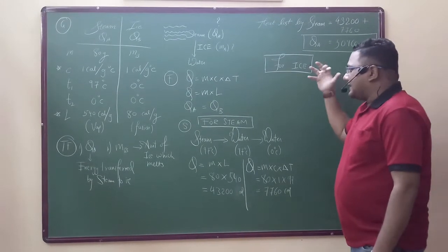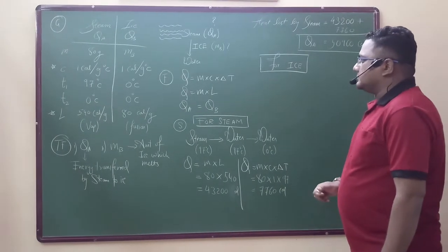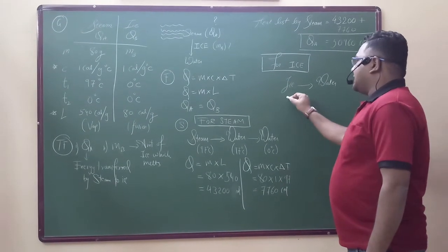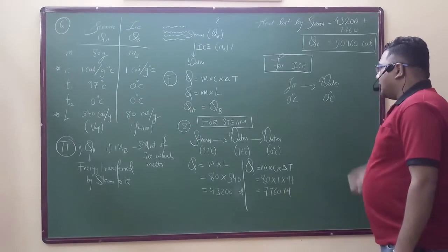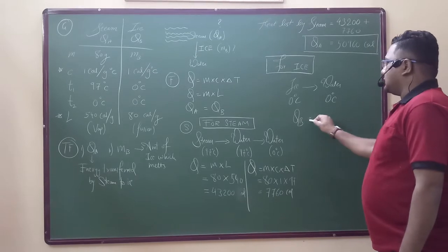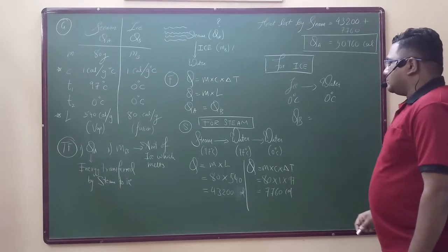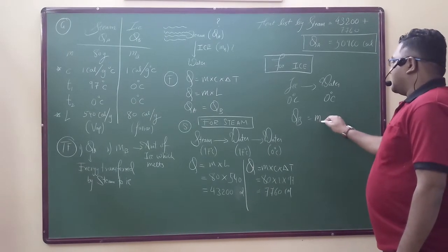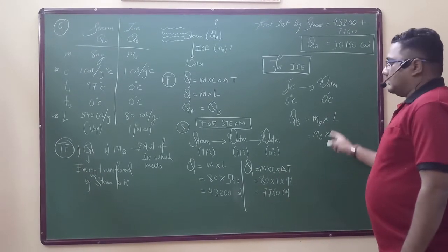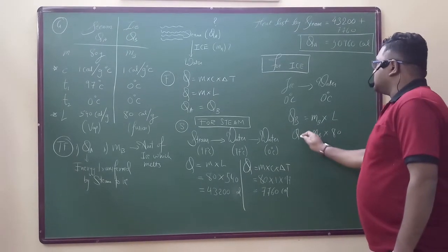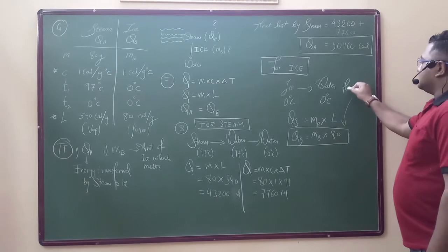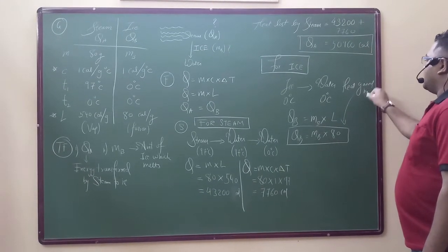For ice: ice melts to become water. Ice at 0 degrees Celsius first becomes water at 0 degrees Celsius — state of matter changes, temperature remains the same — so we use the latent heat formula: Q equals M into L. So QB equals MB into 80. This is the heat gained by ice.